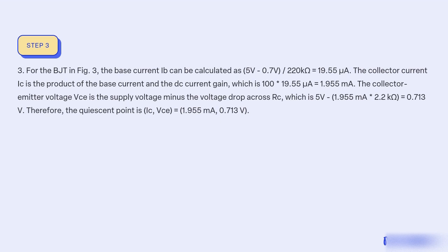Three, the base current IB can be calculated as (5V minus 0.7V) / 220Ω equal to 19.55μA. The collector current IC is the product of the base current and the DC current gain, which is 100 × 19.55μA equal to 1.955mA. The collector-emitter voltage VCE is the supply voltage minus the voltage drop across RC, which is 5V minus 1.955mA × 2.2kΩ equal to 0.713V. Therefore, the operating point is IC, VCE equal to 1.955mA, 0.713V.